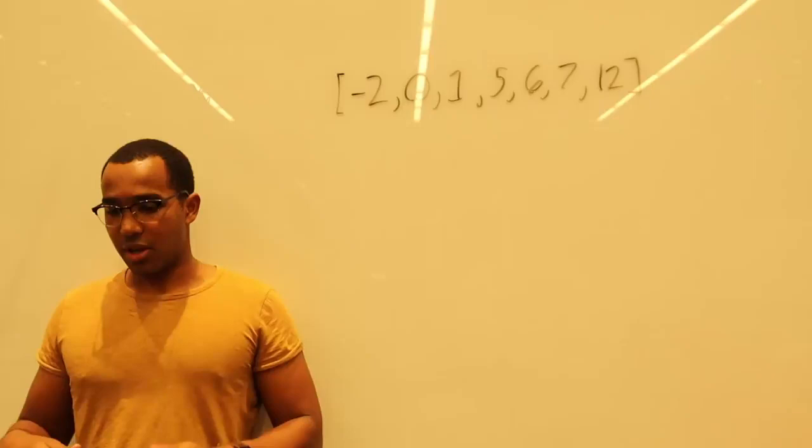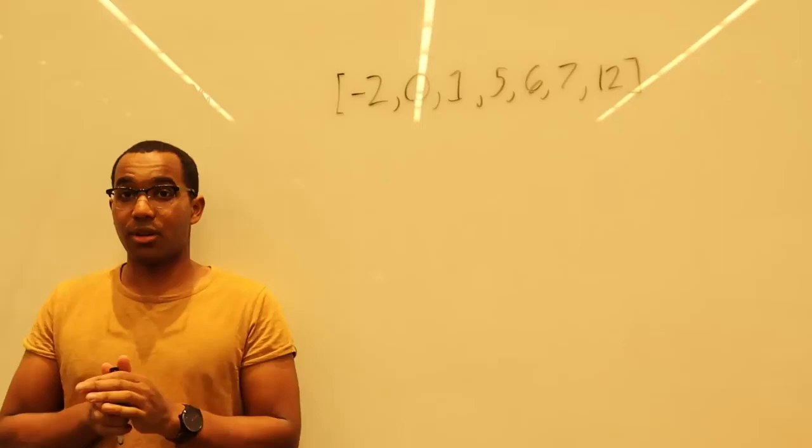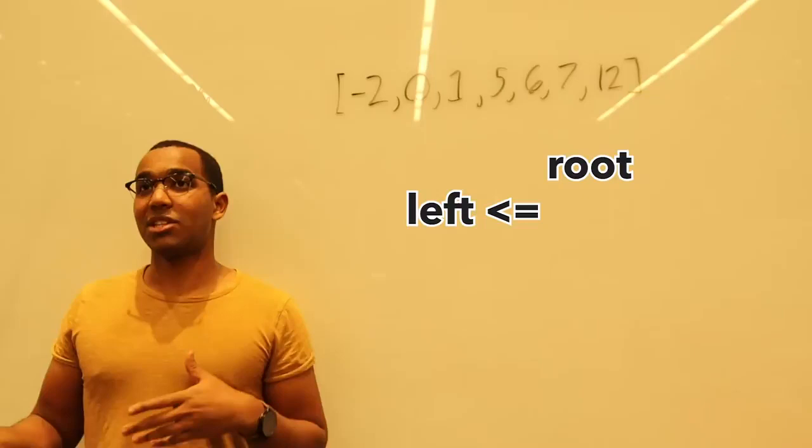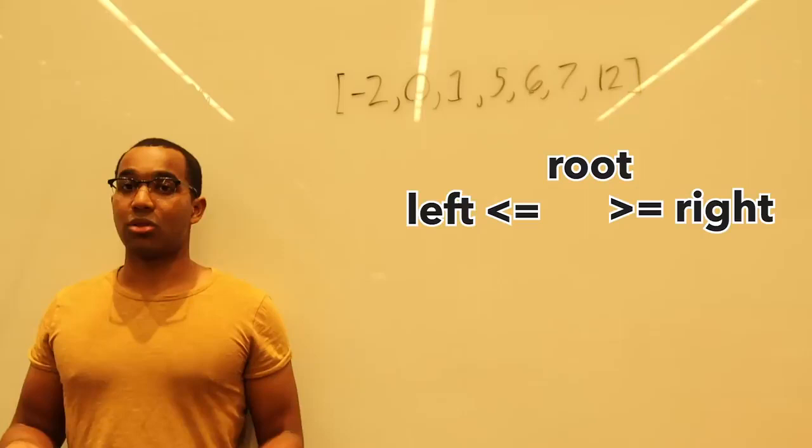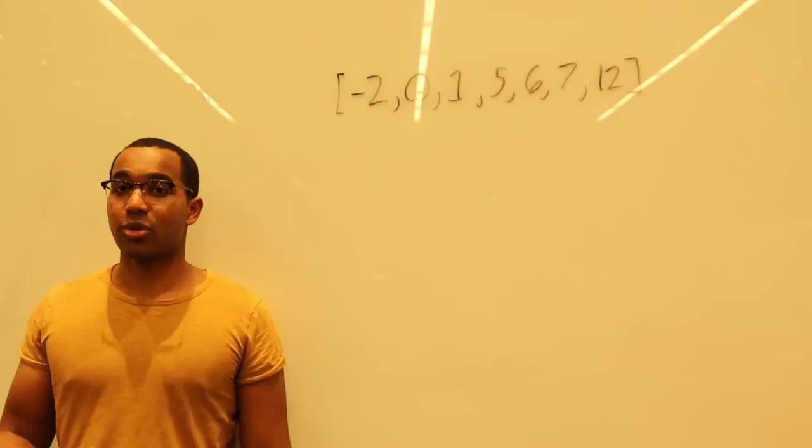A binary search tree is a tree which has the property that at every node, the left subtree is going to have values all less than or equal to the current node, and the right subtree will have all values greater than or equal to the node we're sitting at. And this is true for every node in the tree.